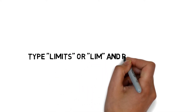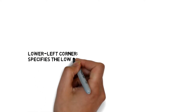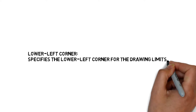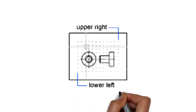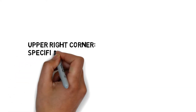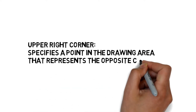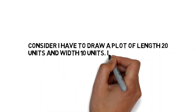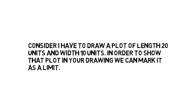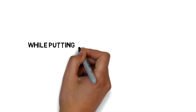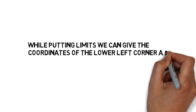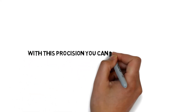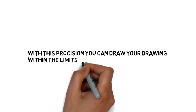Type limits or LIM and press enter. Specify the lower left corner for the drawing limits. The upper right corner specifies a point in the drawing area representing the opposite corner of the rectangle limit boundary. For example, to draw a plot of length 20 units and width 10 units, give the lower left corner as 0,0 and upper right corner as 20,10. With this precision, you can draw your drawing within the limits area.